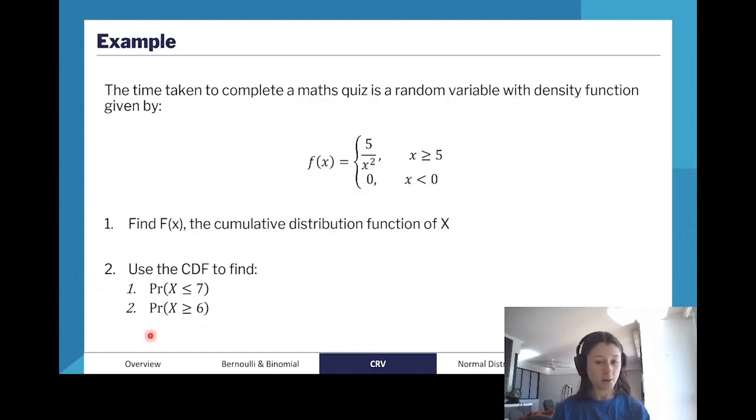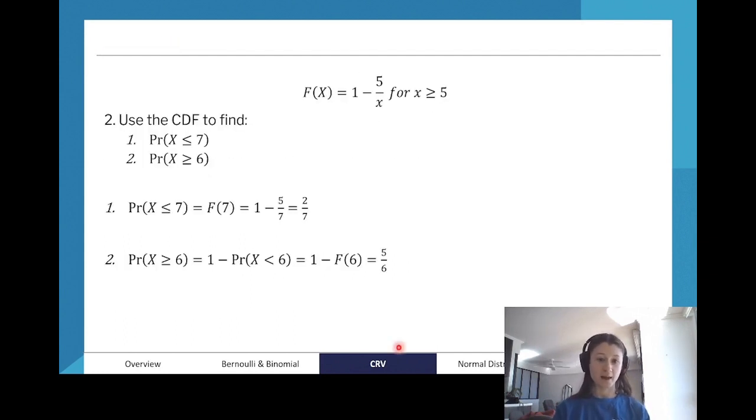Now, the next part of the question is to use our CDF to find these two probabilities here. Our first one is to find the probability that X is less than or equal to 7. Remember, when we're using our CDF, we can use the value of the CDF, not the area, the value of the CDF, to find the probability that X is less than a certain value. So to find that X is less than 7, all we need to do is find the function of 7. Pretty easy.